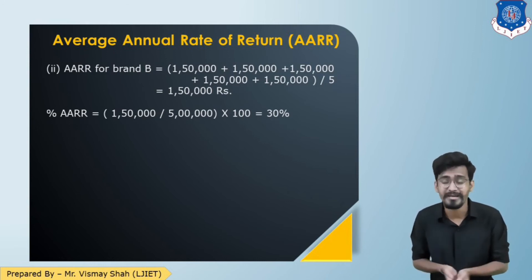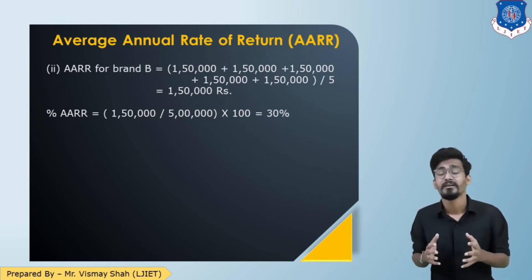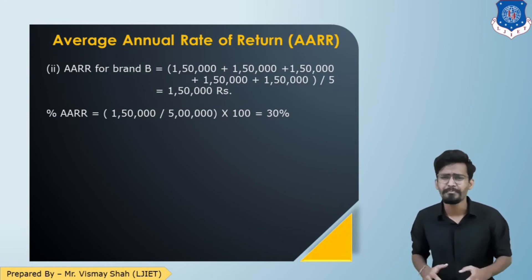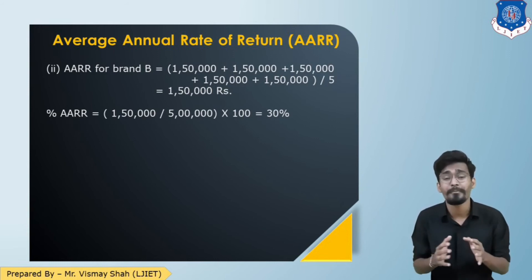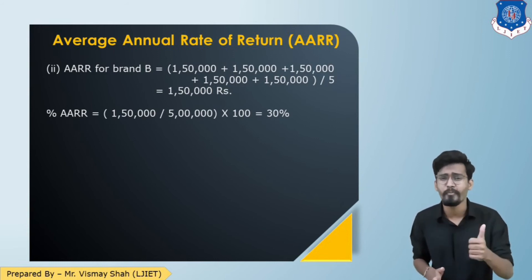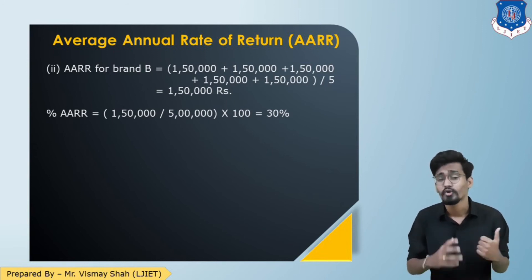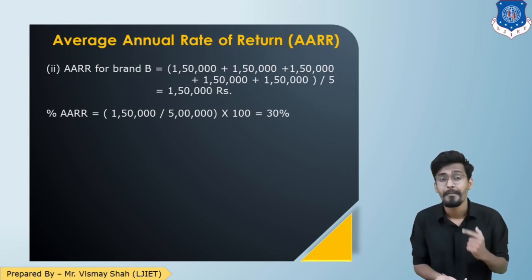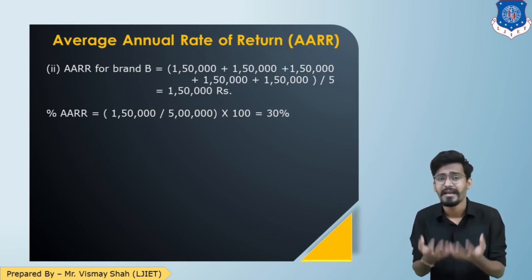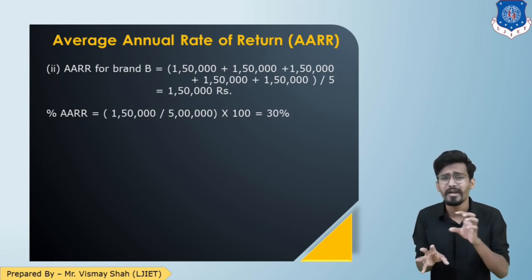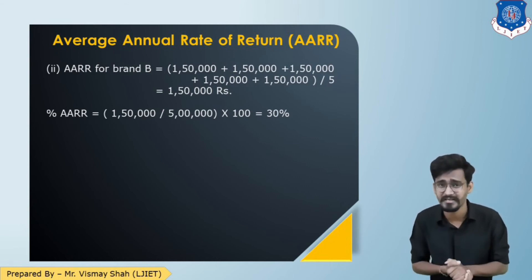The average annual rate of return is higher for option B compared to A, so we select option B. To summarize economic decision making: out of pocket considers total expenses incurred; payback period looks at how long to recover the invested amount; average annual rate of return expresses the average annual return as a percentage of the total cost.